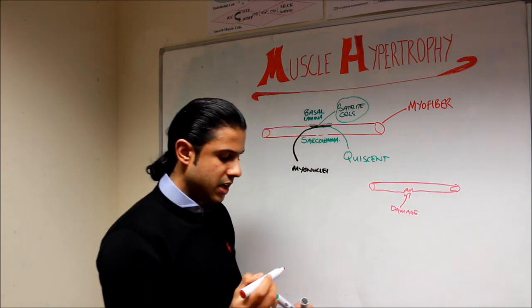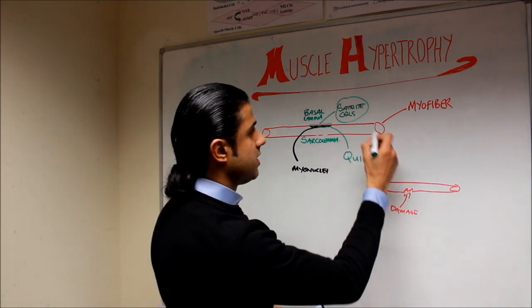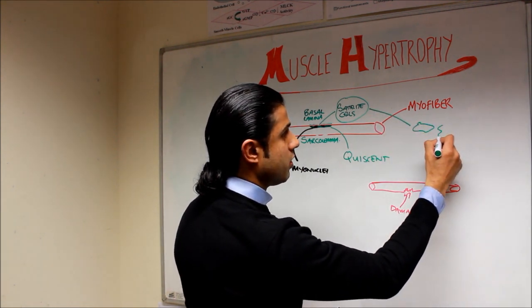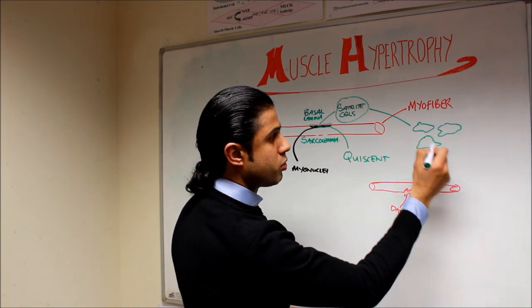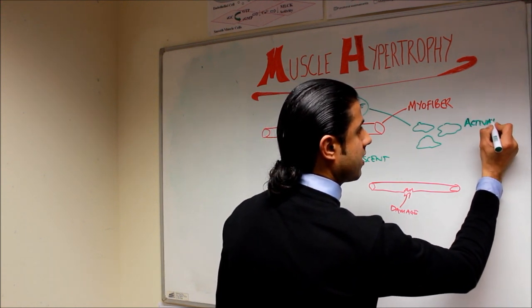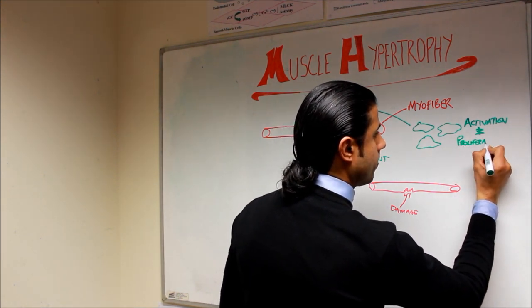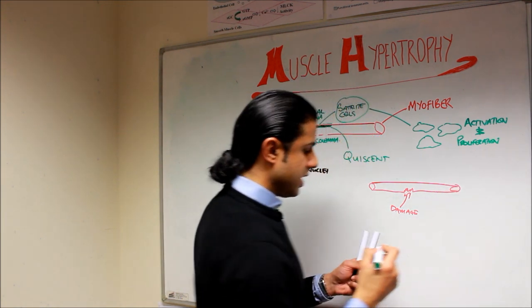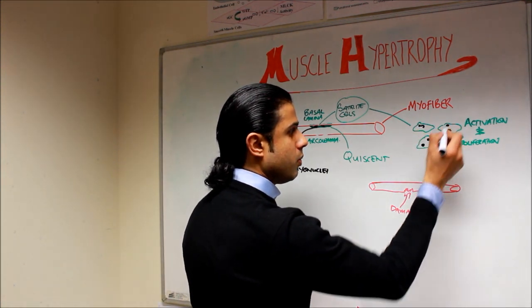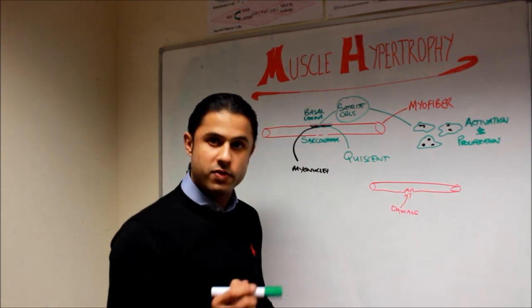the satellite cells. The satellite cells are now going to become activated and then they're going to proliferate. We have activation and proliferation of the satellite cells. Those satellite cells have each got myonuclei which they're going to donate to the damaged myofiber.